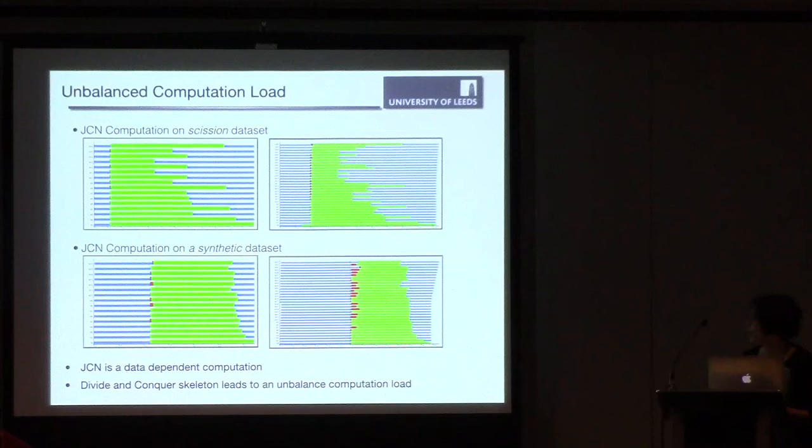Here, so on the top, we can see the runtime profile of JCN computation for Isabel data set on 16 and 32 PEs, using 16 or 32 PEs. Each horizontal line shows the activity of one PE over time. So as can be seen, each PE can take different time to compute the data. And the reason is that the computation work depends on the property of the data. So it depends on how much the gradient is changing.